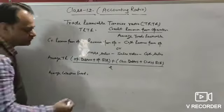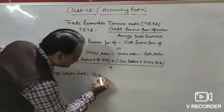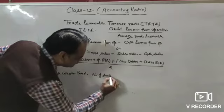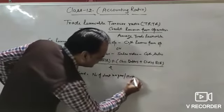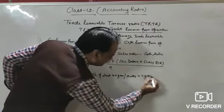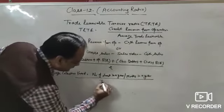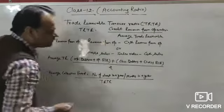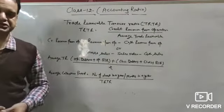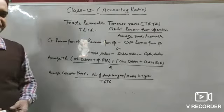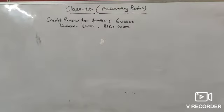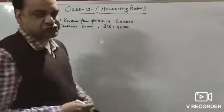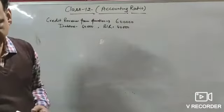The average collection period formula uses the trade receivable turnover ratio. Now let's look at the collection period calculation. The next illustration is illustration number 70.